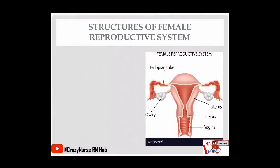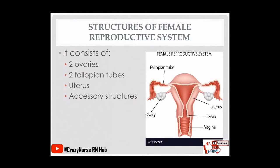First, we have here the structures involved in the female reproductive system. It consists of two ovaries, two fallopian tubes, uterus, and we also have accessory structures such as vagina, clitoris, labia, and breast tissue. I have here a picture of the female reproductive system structures as your reference.